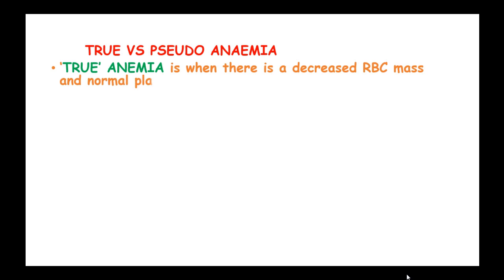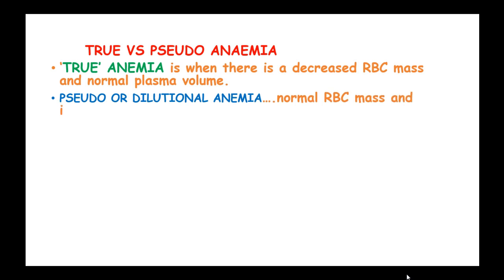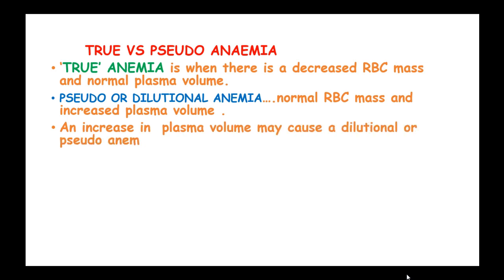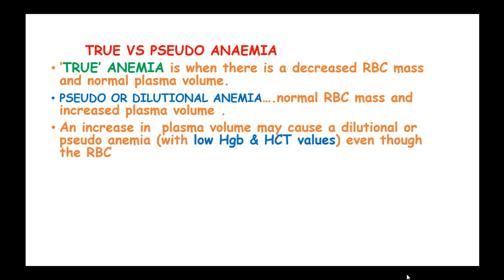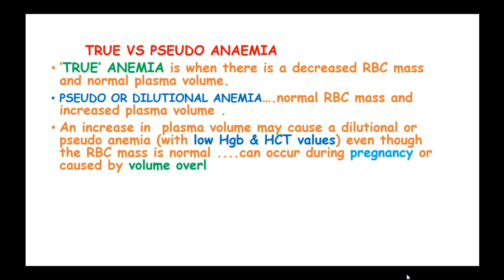We have true and pseudo-anemia, or dilutional anemia. In true anemia, it occurs when there is a decreased red blood cell mass and a normal plasma volume. But in pseudo or dilutional anemia, there is normal red blood cell mass and an increased plasma volume. An increase in plasma volume may cause a dilutional or pseudo-anemia whereby there is low hemoglobin and hematocrit values, even though the red blood cell mass is normal.